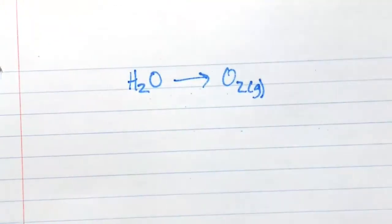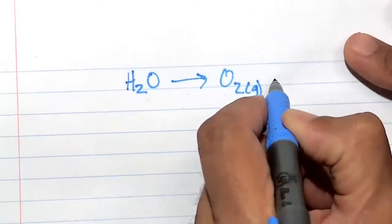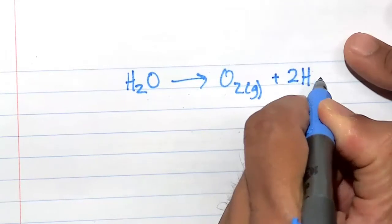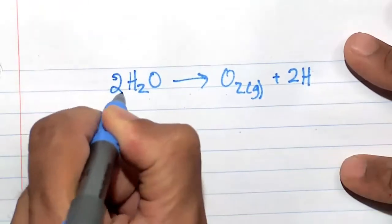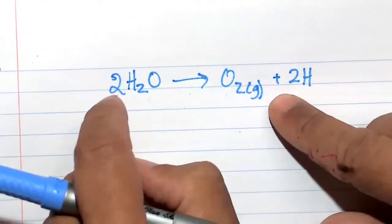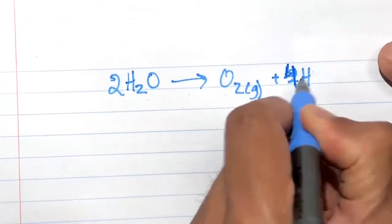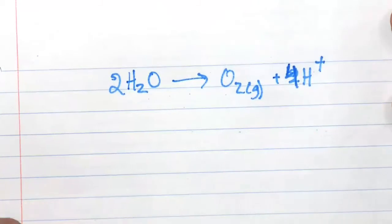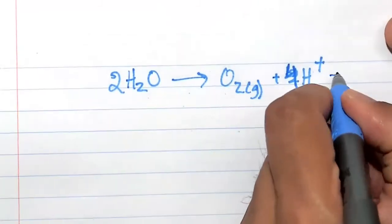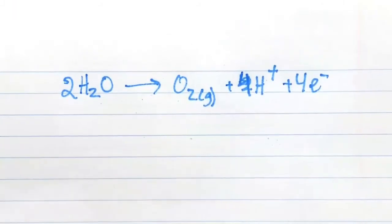Let's take a look at our reduction potential table. This is an oxidation, so we're actually losing electrons. Let's go ahead and balance this out. We'll put a two in front of the water to balance out the oxygens — two oxygens on each side — then four H⁺, and then four e⁻. So this is the actual oxidation reaction occurring in acid.